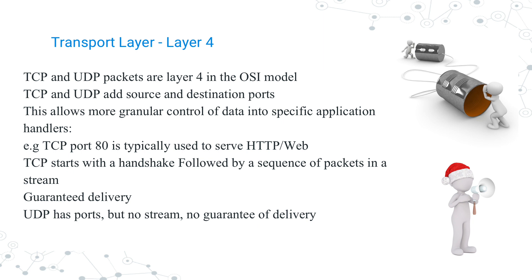As we continue up the OSI stack, we begin to deal with communications within applications on a host — the session, presentation, and application layers. The application layer, layer 7, is what we tend to think about most when dealing with protocols such as HTTP for web communications and SMTP for email. We'll focus mostly on layer 7, skipping layers 5 and 6 for now.